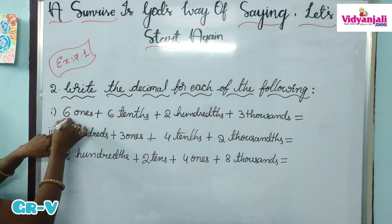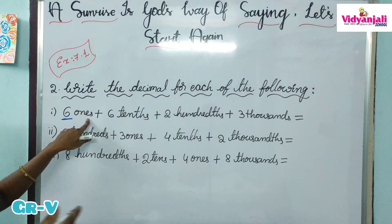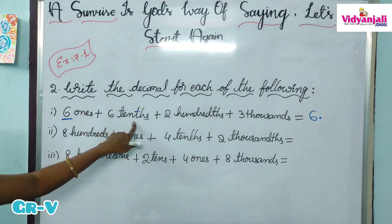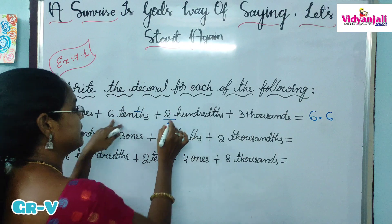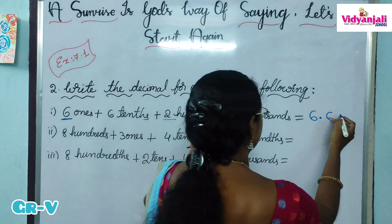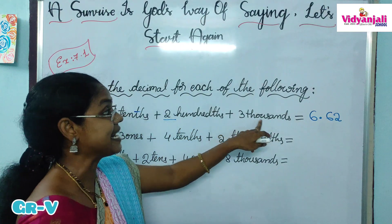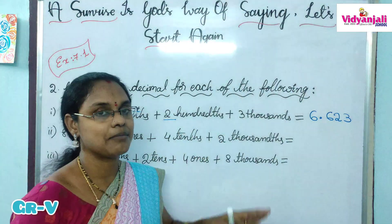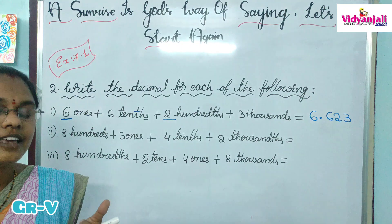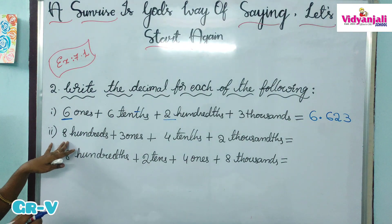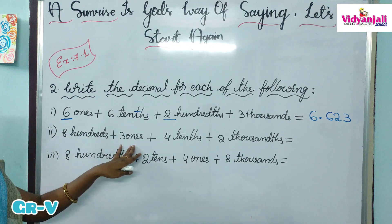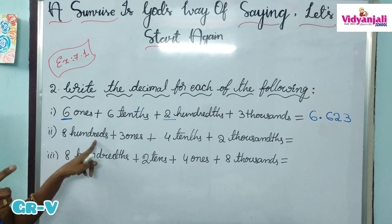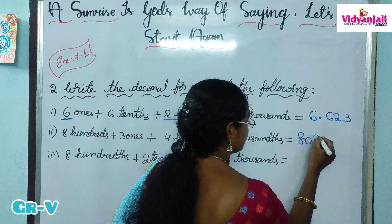6 ones — so this is the whole part, 6 in the 1's place. After the 1's place we obviously know there is a decimal point. 6 tenths means 6 in the 10ths place. Then 2 in the 100ths place. After 10ths comes 100ths place. Then 3 in the 1000ths place. While writing any number, if any place is missing, we have to keep 0 in that place. So: 8 hundredths, 3 ones — in between, 10ths is missing. So we write 8 in 100ths place, 0 in 10ths place, 3 in 1's place — giving 803.